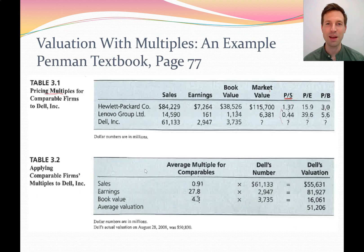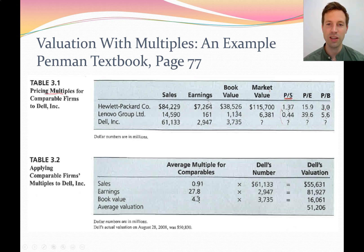Here's an example from the Penman textbook — it's a bit of an old one. We've got three companies in the computer industry: Hewlett Packard, Lenovo, and Dell. We've got financial information for each — sales, earnings, book value, and market value — which is used to calculate three different ratios: a price to sales ratio, a price to earnings ratio, and a price to book ratio.